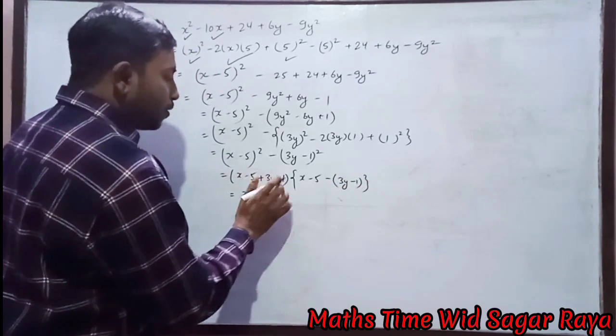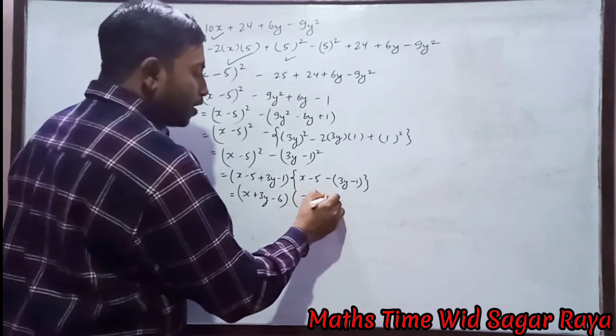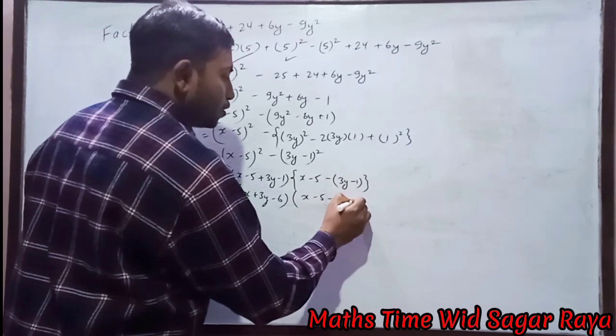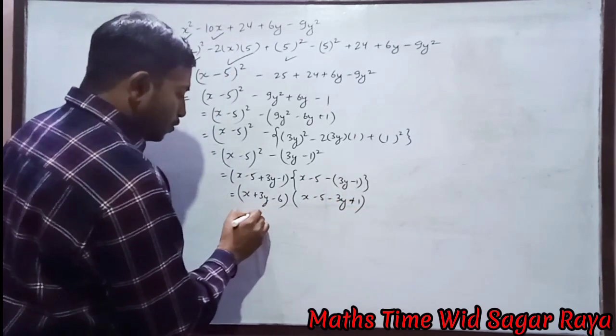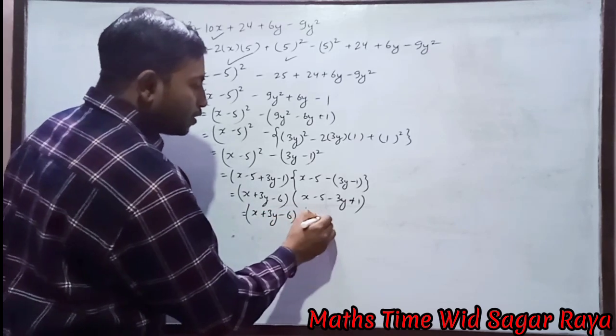So x + 3y - 3y. Minus times minus 1 means minus 6. Here x - 5 minus minus 3y, minus minus becomes plus 1.